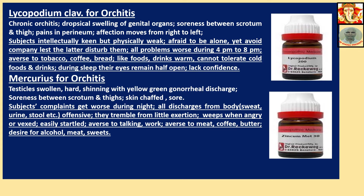Mercurius for Orchitis: Testicle swollen, hard, shining, with yellow-green gonorrheal discharge. Soreness between scrotum and thighs. Skin chapped and sore. Subjects' complaints get worse during the night. All discharges of the Mercurius patient from the body — sweat, urine, stool, etc. — are offensive. They tremble from little exertion. Weep when angry or vexed. Easily startled. Averse to talking and work. Averse to meat, coffee, water. Desire for alcohol, meat, and sweets.